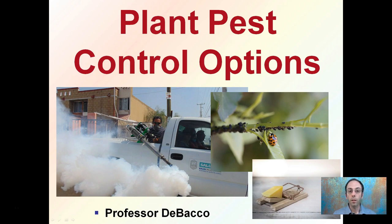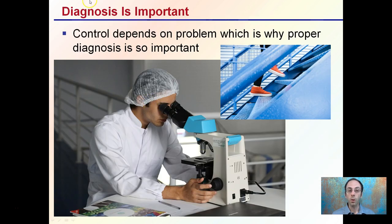Here we are investigating some plant pest control options. When I say plant pest, you may jump to a conclusion and think of an insect, while others may think of a mouse — these all fall under the same classification of plant pests. With any plant pest, diagnosis is important. Knowing the exact pest to the greatest degree of certainty is advantageous because control depends on the problem, and proper diagnosis sets the steps into motion for using your resources most efficiently.